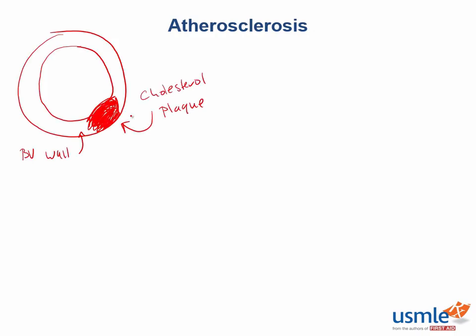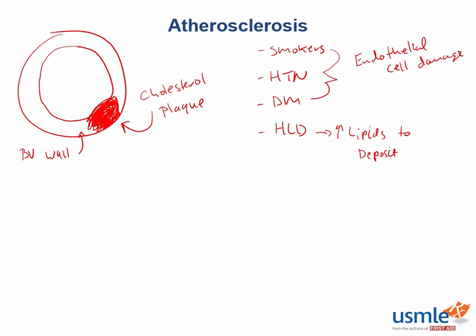With this disease, who is at risk? Smokers, patients with hypertension, diabetes, as well as those with hyperlipidemia. Patients with hypertension, diabetes, as well as those that smoke result in direct endothelial cell damage, and patients with hyperlipidemia are at an obvious increased risk because they have increased lipids that can deposit within the intima of the vessel wall.